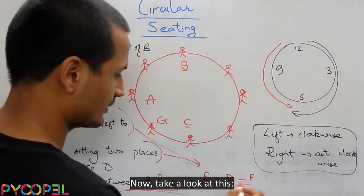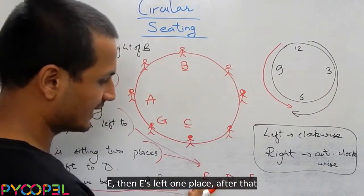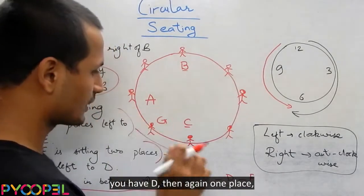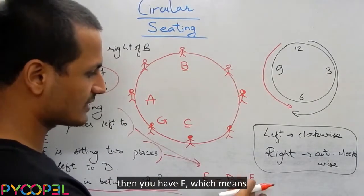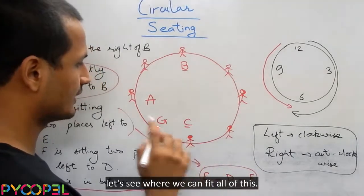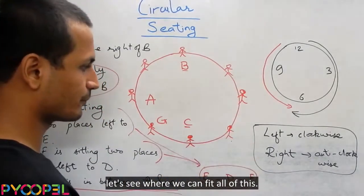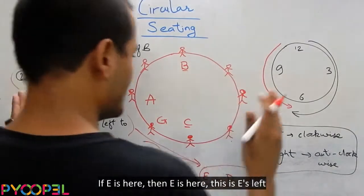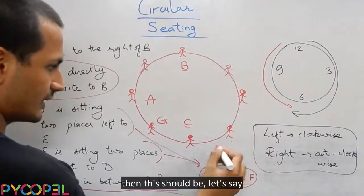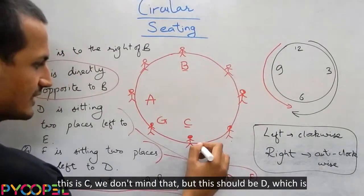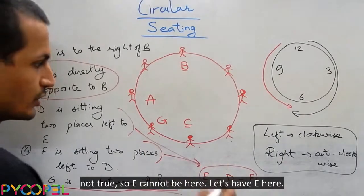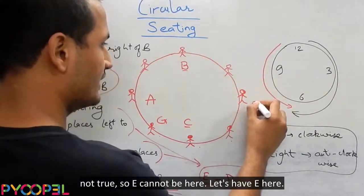Now, take a look at this. E, then E's left, one place, after that you have D. Then again one place, then you have F. Which means, let us see where we can fit all of this. If E is here, then E is here. This is E's left. Then this should be, let us say this is C. We do not find that. But this should be D, which is not true. So E cannot be here.